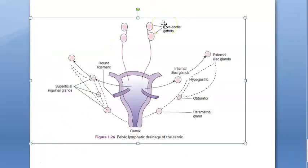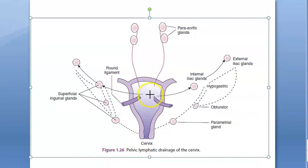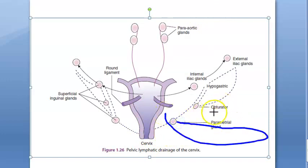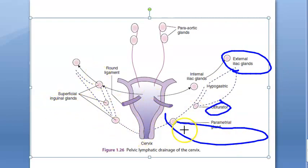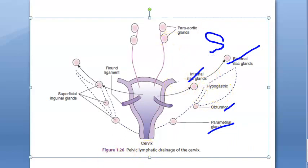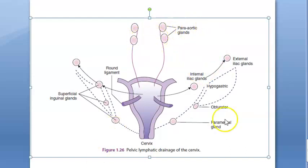Here is another nice diagram about cervical drainage that you can draw in the exam. Draw a uterus, draw the tubes, draw the cervix. From the cervix, drainage goes to parametrial, then internal iliac and external iliac, and also the obturator. Something is missing in this diagram - the sacral. For primary you should have five groups: parametrial, obturator, internal iliac, external iliac, and sacral. For secondary, you say common iliac and superior lumbar.